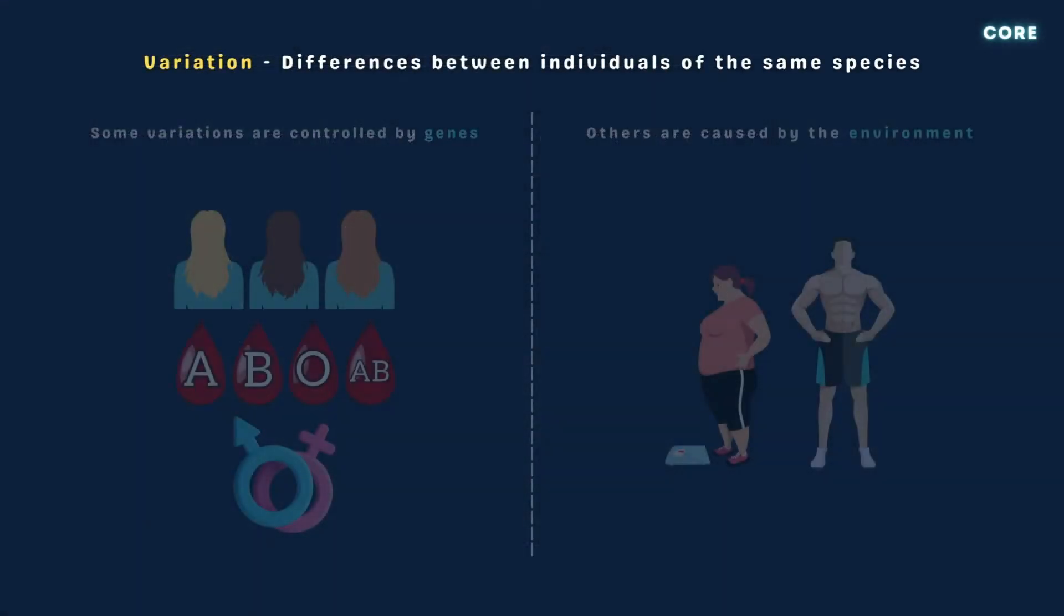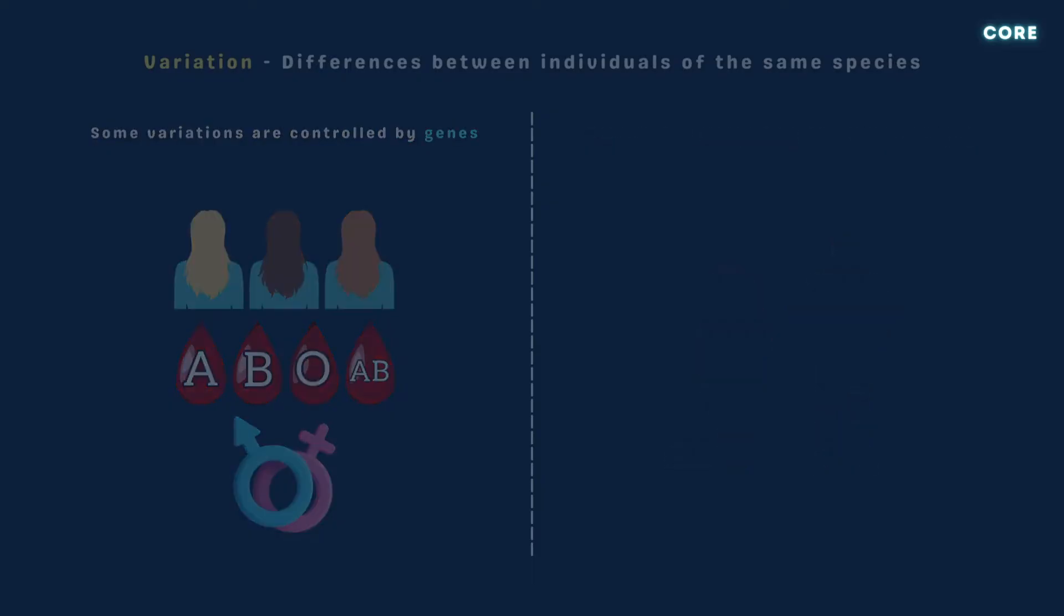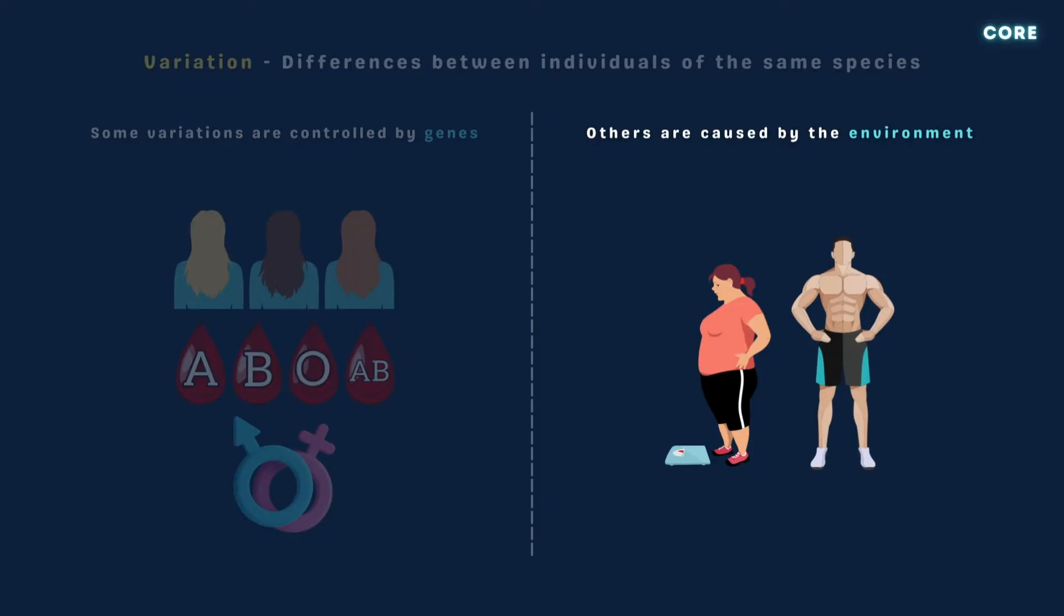The term variation refers to the observable or phenotypic differences between individuals of the same species. Some phenotypic variations, like hair colour, blood group, and gender, are controlled by genes, while others are caused by environmental factors like climate, physical activity, and diet.